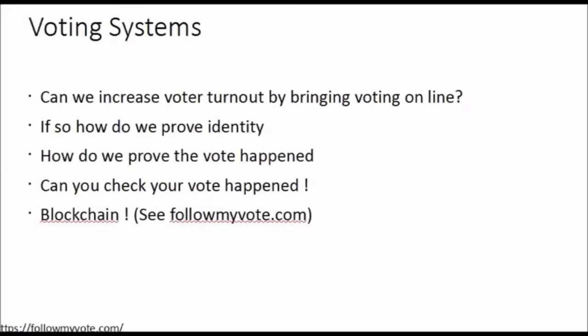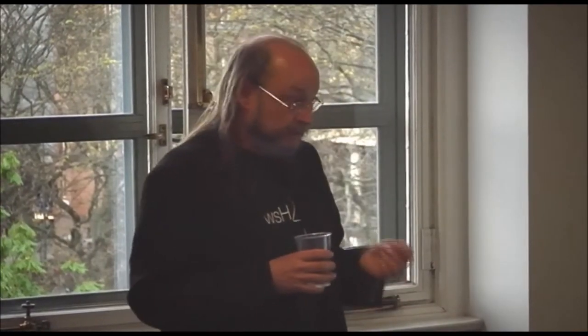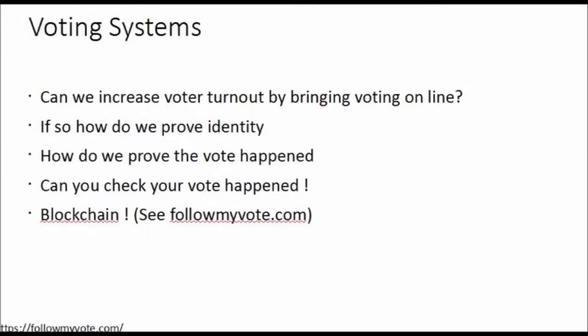Voting systems: we all know you go into a booth, put a little X on a paper, and it's bad for democracy because lots of people don't want to go out when it's raining. If you can do an electronic version of voting and prove that the person who voted actually voted, and that they can verify at any point that their vote hasn't been changed, then we might get more people to vote. There is a system using blockchain called followmyvote.com. You get an ID from the government that proves who you are, and hopefully you can then look at your vote and verify it at any point.